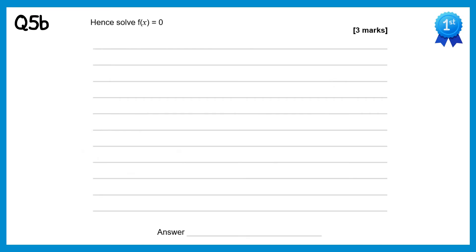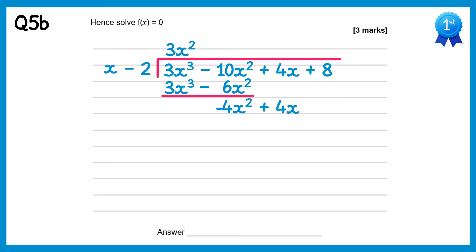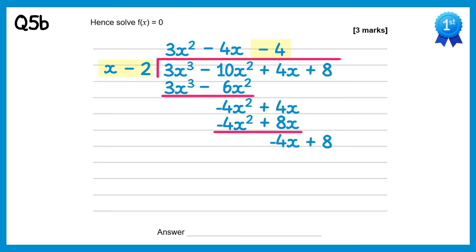For part b we need to solve f of x equals 0, so we need to factorise it fully. We'll take our polynomial and divide it by the linear factor. 3x cubed divided by x is 3x squared. Multiply back through: 3x cubed take away 6x squared. Subtract — the 3x cubes cancel and negative 10x squared take away negative 6x squared gives negative 4x squared. Bring down the next term. Negative 4x squared divided by x gives negative 4x. Multiply back: negative 4x squared plus 8x. Subtract — the negative 4x squared cancel, so 4x take 8x is negative 4x. Bring down the final term. Negative 4x divided by x gives negative 4. Multiply back to get negative 4x plus 8. Take away these and you get 0.